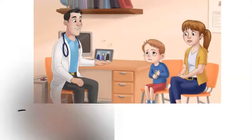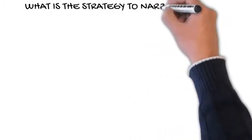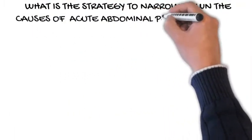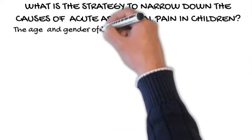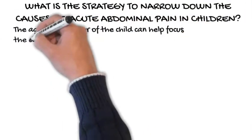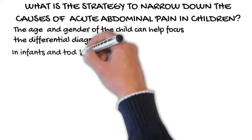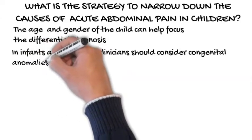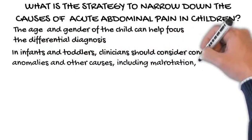Frequently Asked Questions About Acute Abdominal Pain in Children. What is the strategy to narrow down the causes of acute abdominal pain in children? The age and gender of the child can help focus the differential diagnosis. In infants and toddlers, clinicians should consider congenital anomalies and other causes, including malrotation, hernias, and Meckel's diverticulum.